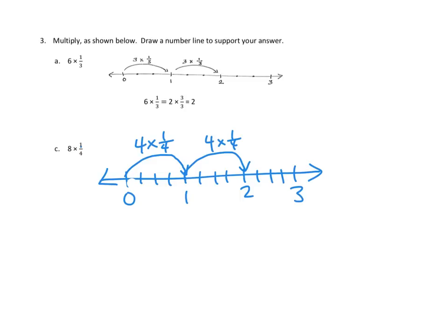Let's go ahead and write our number sentence below that. That would be 8 times 1 fourth is the same as, we did 2 big hops, so that's 2 times 4 fourths. Each of those hops, each of them went over 4 fourths. So twice we made hops all the way to 4 fourths. So that's 2 times 4 fourths, and that's the same as, as we can see in our diagram, 2.